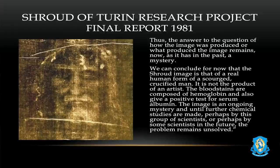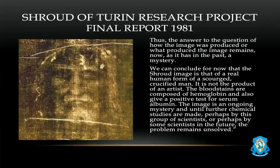The report concludes: 'The answer to the question of how the image was produced or what produced the image remains, as it has in the past, a mystery. We can conclude for now that the shroud image is that of a real human form of a scourged, crucified man — which again, we have no other account of in human history except the Gospels. The bloodstains are composed of hemoglobin and give a positive test for serum albumin. The image is an ongoing mystery, and until further chemical studies are made, the problem remains unsolved.'